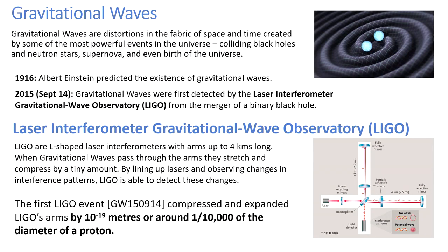Gravitational waves are distortions in the fabric of space and time. They can be caused by major events in the universe — for example, the merger of black holes, or merger of neutron stars, or supernovae, or even the birth of the universe in the Big Bang.